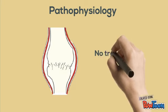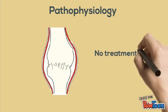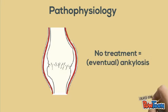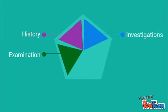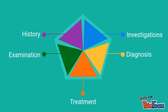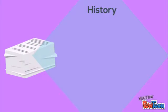A further complication of no treatment is eventual ankylosis. A thorough history and physical examination should give you a high level of suspicion of septic arthritis. Investigations should be carried out to confirm the diagnosis and subsequent individualized management should be commenced.